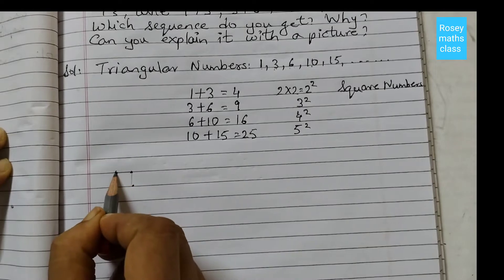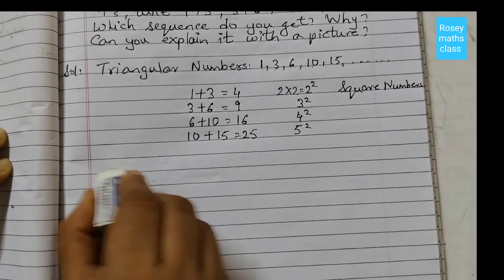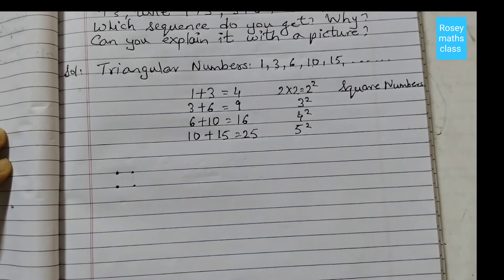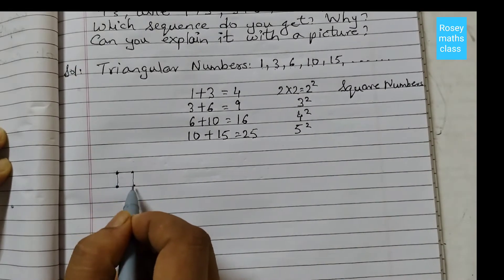Triangular numbers form triangles, right? So this is a triangle if you draw it like this, or if you just join it. If you join the four dots, you will see that this is a square.